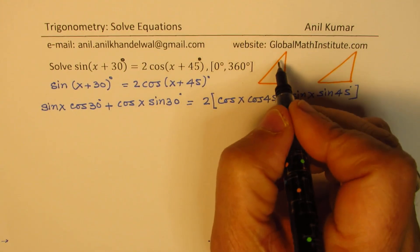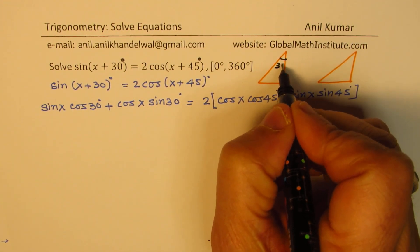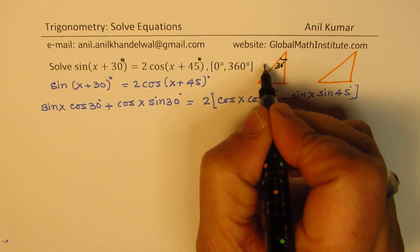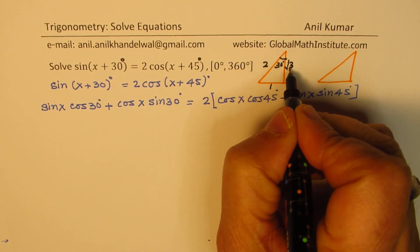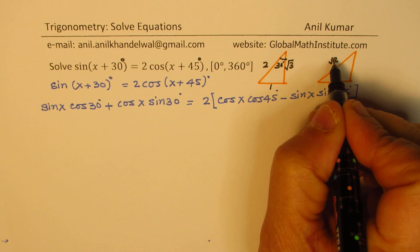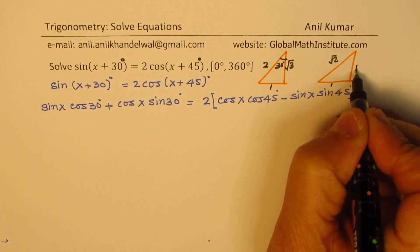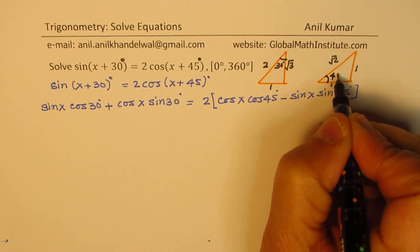These triangles have sides which are, if this is 30 degrees, in that case sides are 1, 2, and square root of 3. And here we have square root of 2, 1, 1, for 45 degrees.